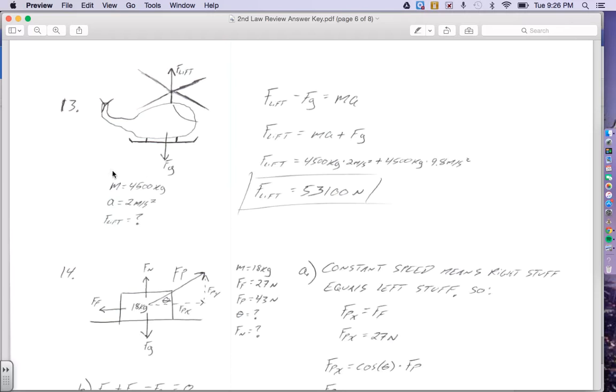Mass is 4,500 kilograms, acceleration is 2 meters per second squared, and we're trying to find the force of lift. Our equation comes from our picture. Our upward arrow, force of lift, is positive. Force of gravity is downward, so it's minus force of gravity, and that's all going to equal M A.